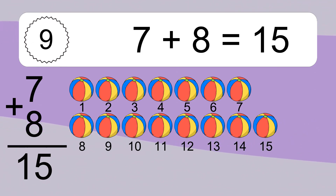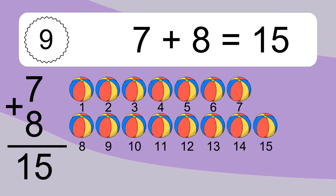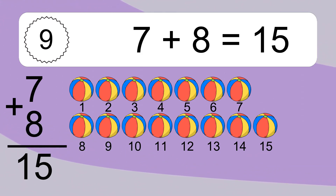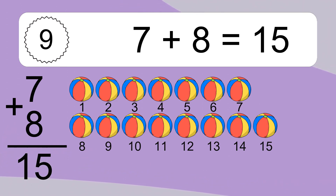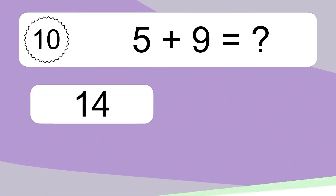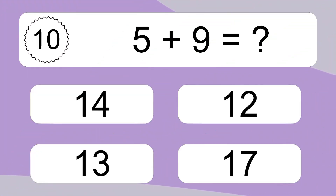Let's count it. 1, 2, 3, 4, 5, 6, 7, 8, 9, 10, 11, 12, 13, 14, 15. 5 plus 9 equals what?